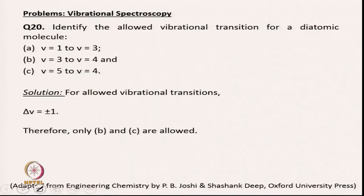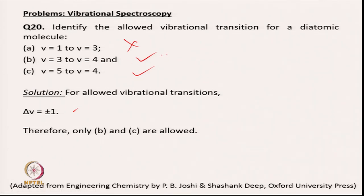Next: identify the allowed vibrational transitions for a diatomic molecule. The selection rule requires ΔV = ±1. The first option is not allowed; the second (ΔV = +1) and third (ΔV = −1) are both allowed.